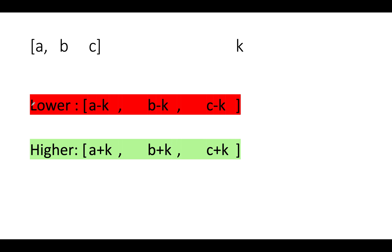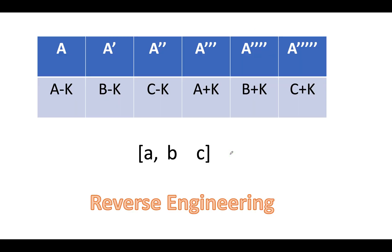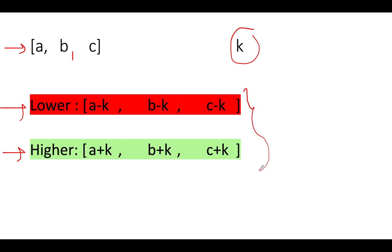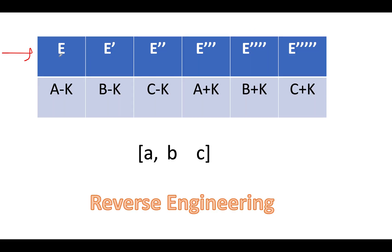Let's try to draw the equations formed from the question. We have an original array — let's assume there were only three elements a, b, and c — and a positive integer k. We created a lower array with elements a-k, b-k, c-k, and a higher array with elements a+k, b+k, c+k. Now we will reverse engineer the algorithm, thinking in the reverse direction. What is given to us is six elements — the combination of the lower and the higher array — and we don't know whether a particular element belongs to the lower or the higher array. Let's assume element e maps to a-k, e' maps to b-k, e'' maps to c-k. These three are part of the lower array.